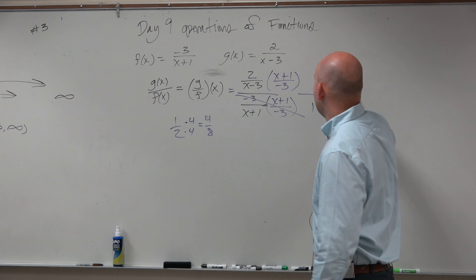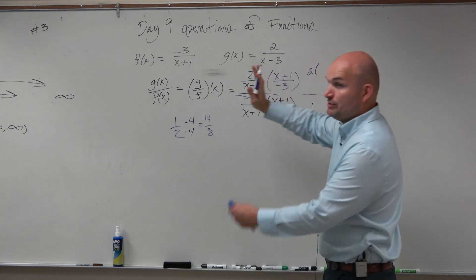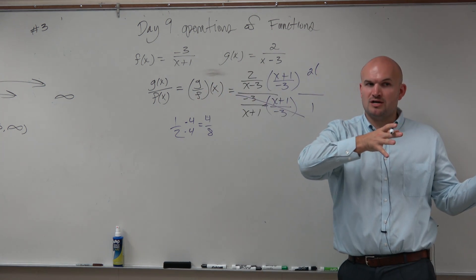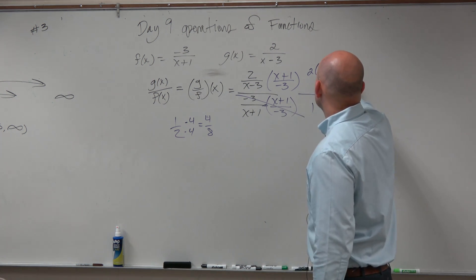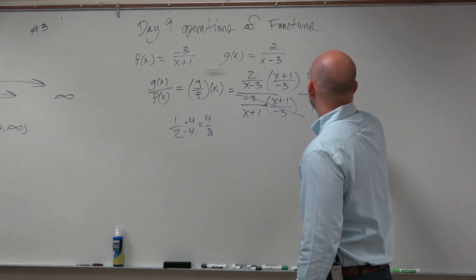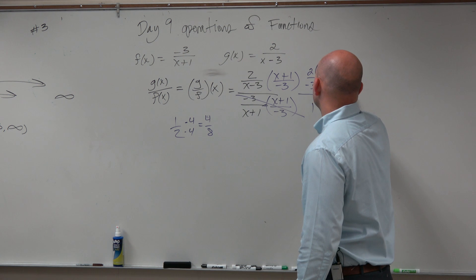Over here, we have 2 times, remember when you multiply fractions, you just multiply straight across. You don't need common denominators. 2 times x plus 1 all over negative 3 times x minus 3.